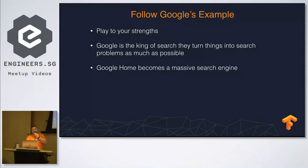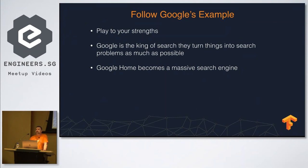Some tricks of the trade: follow Google's example and play to your strength. Google is definitely the king of search and tends to turn things into search problems as much as possible. One thing we've learned is that Google will often turn things into a rank-and-retrieve or search problem rather than a straight prediction problem. Google Home really is just a big search engine in many ways.